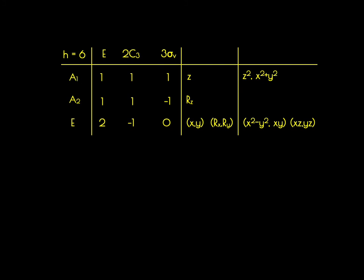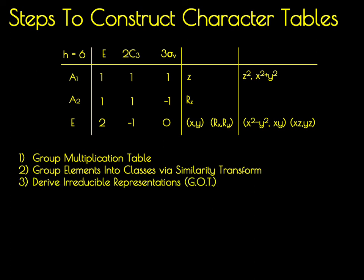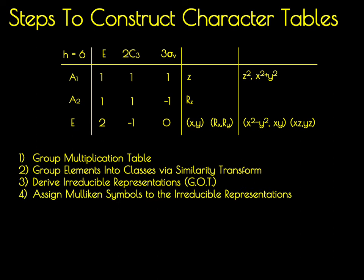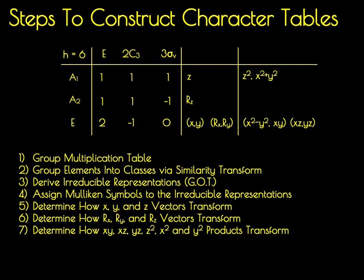To summarize, we went through a series of steps to generate this character table. First, we generated a group multiplication table to see how the six symmetry elements combine. We then used similarity transforms to group those elements into classes. After that, we derived the irreducible representations using consequences of the great orthogonality theorem. We then assigned Mulliken symbols to the irreducible representations, and determined how the linear vectors, rotational vectors, and binary products transform. Although most groups have more operations than C3V, constructing character tables for those groups follows the same steps.